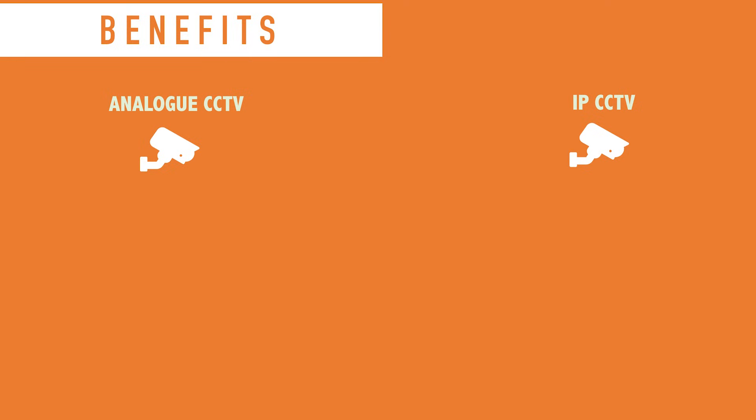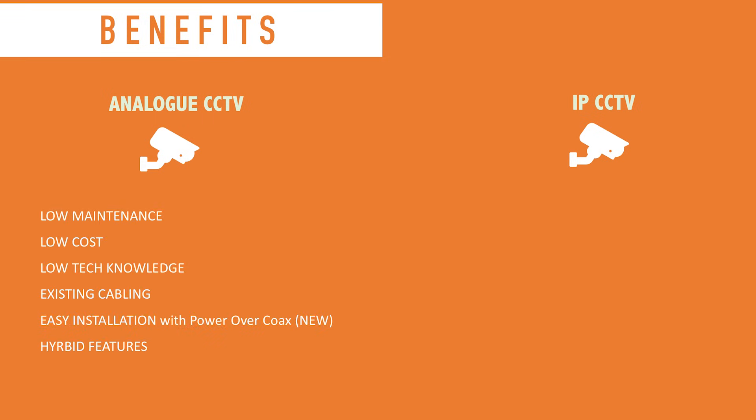Analog CCTV does have a lot of advantages. One is very low maintenance, because the cameras are simpler than IP — they don't have complex brains or IP signals, so the technical knowledge required for installation is simpler. Generally, some of the cheaper systems are analog CCTV. Also, if you've already got a system with existing coaxial or shotgun cabling that you want to upgrade to high definition, it would make more sense to utilize that existing cabling rather than running new wiring.